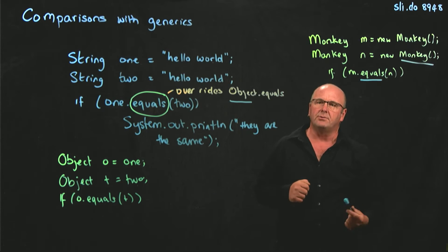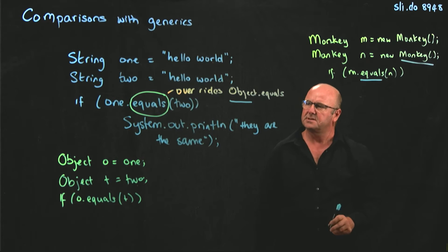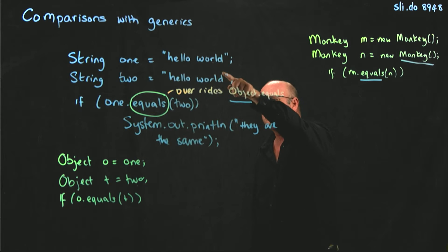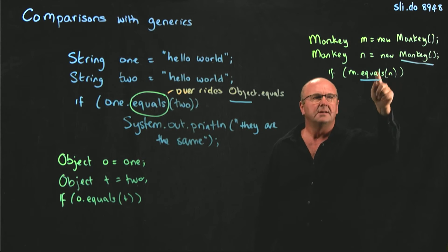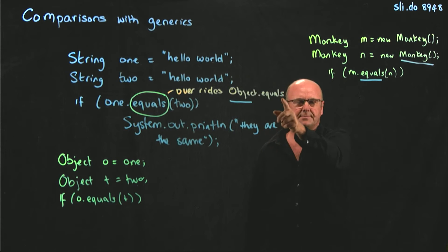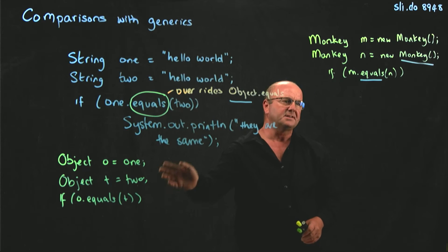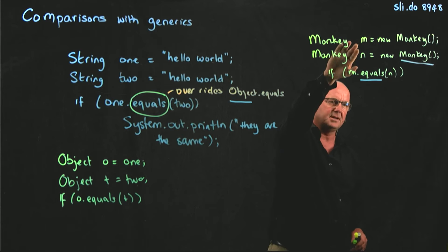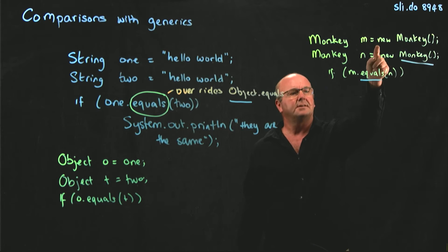And we will always get a response to this question, if m dot equals n. It may not be the correct response because just like we saw with strings, if the person that wrote the monkey class has not overridden the equals, then we're going to use the objects equals. And object equals is not the same as string equals, and it's not the same as monkey equals. And so the problem here is that we have no way of knowing with equals whether the monkey class has overridden the equals.